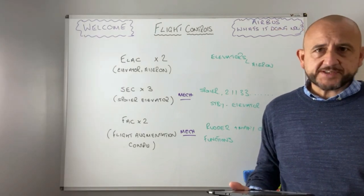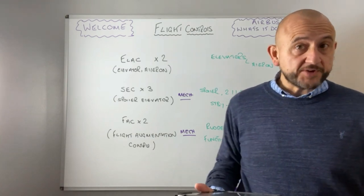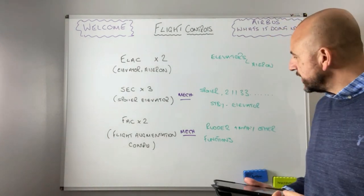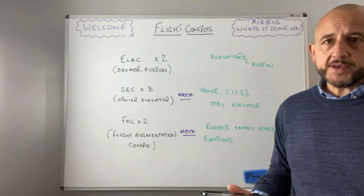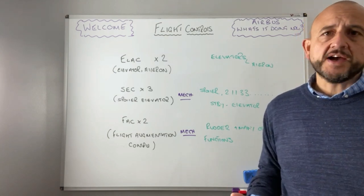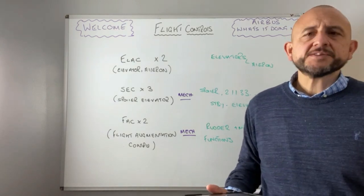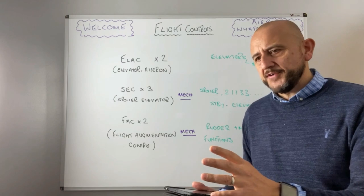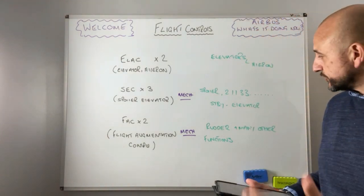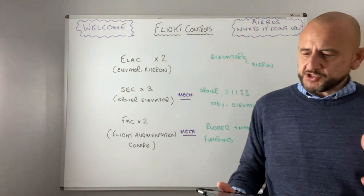Then we have the FACs — Flight Augmentation Computers — which are clever bits of kit. Their control function covers the rudder and yaw damping, but they also have many other functions including zero fuel weight calculation, CG calculation, VLS, and characteristic speeds. The FACs are quite a busy bit of kit on the aircraft. Essentially, the flight augmentation computers control the rudder and yaw damping.